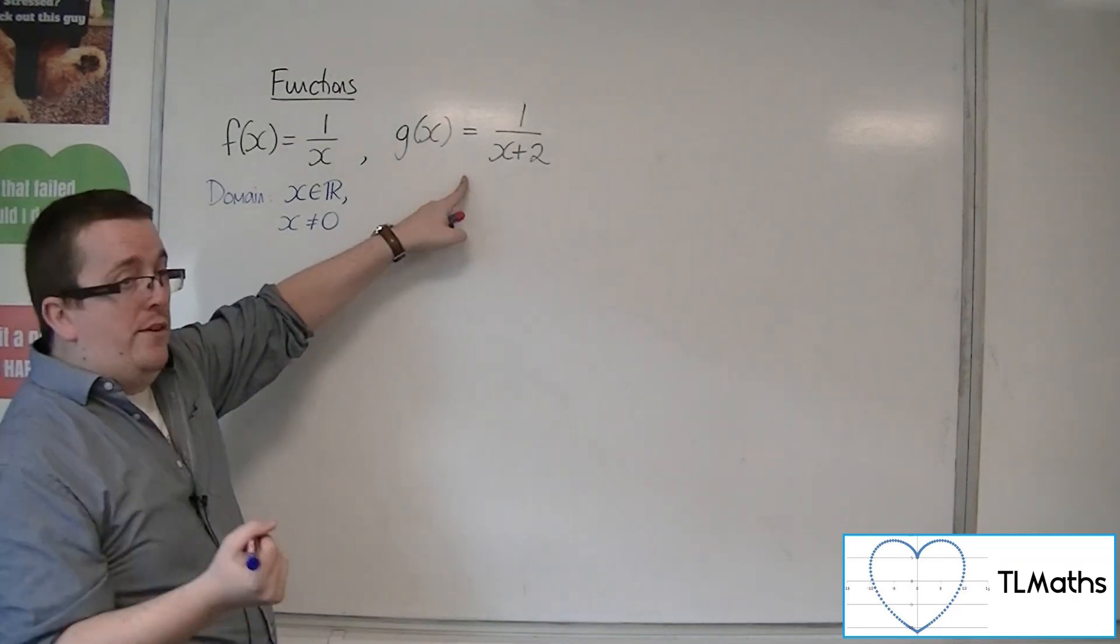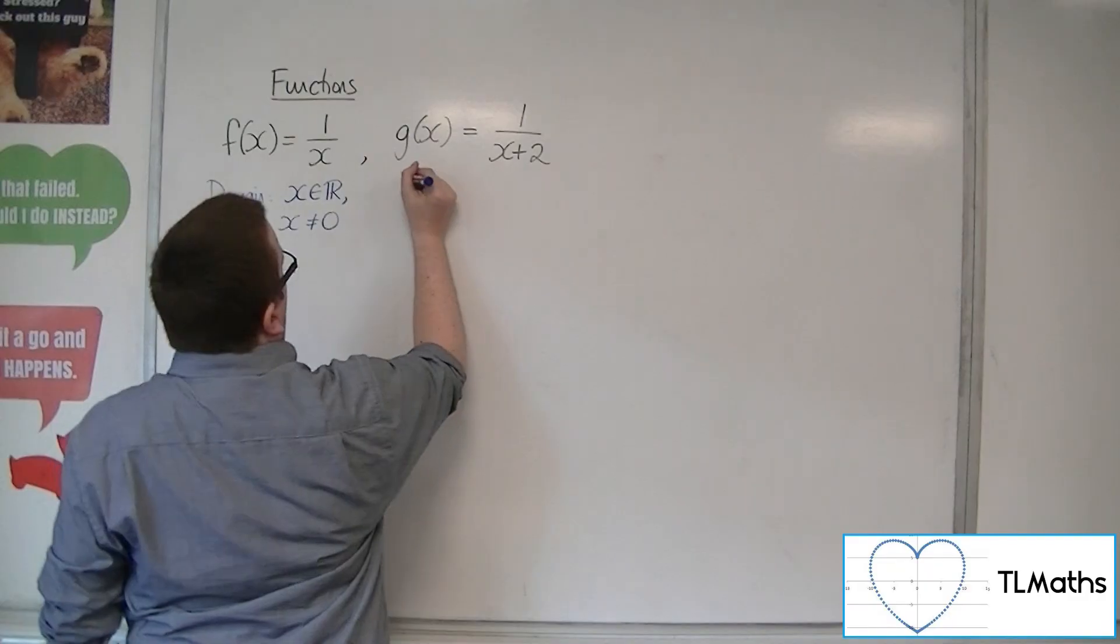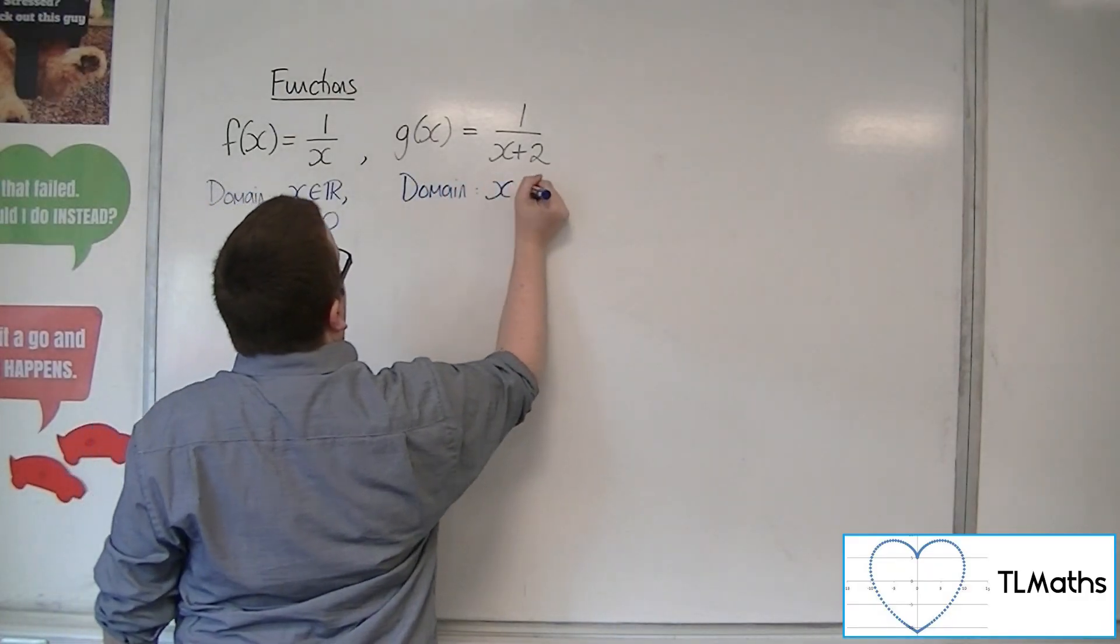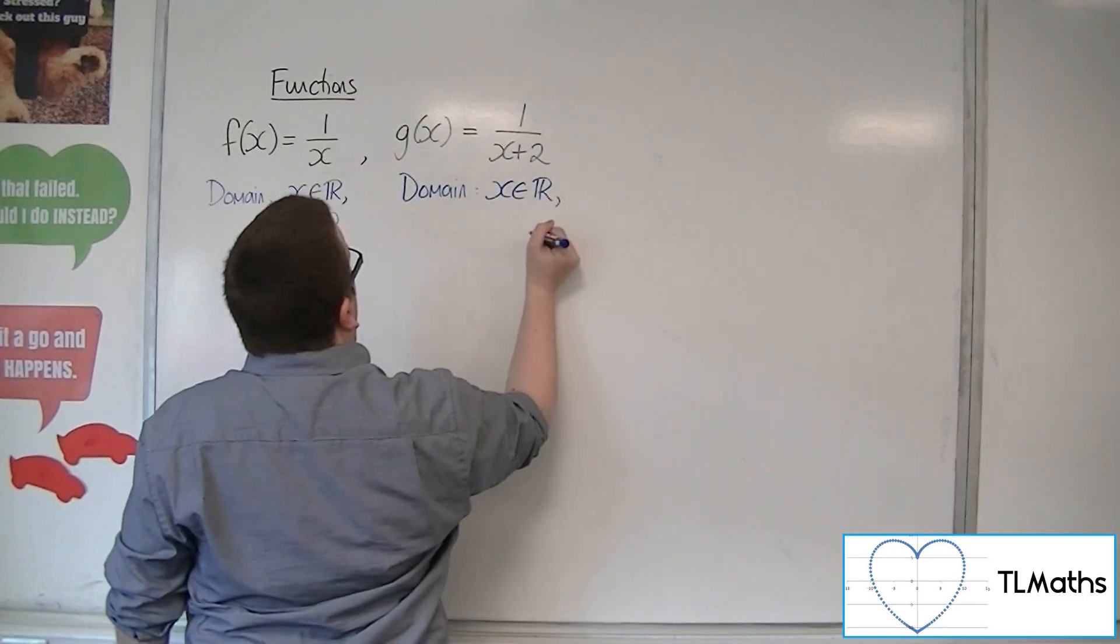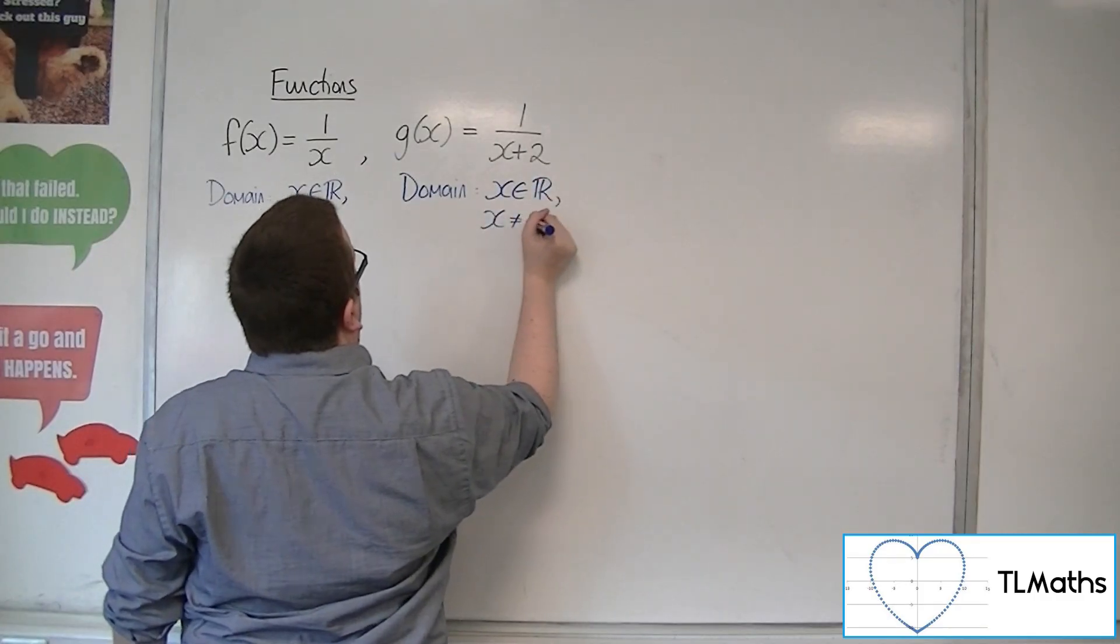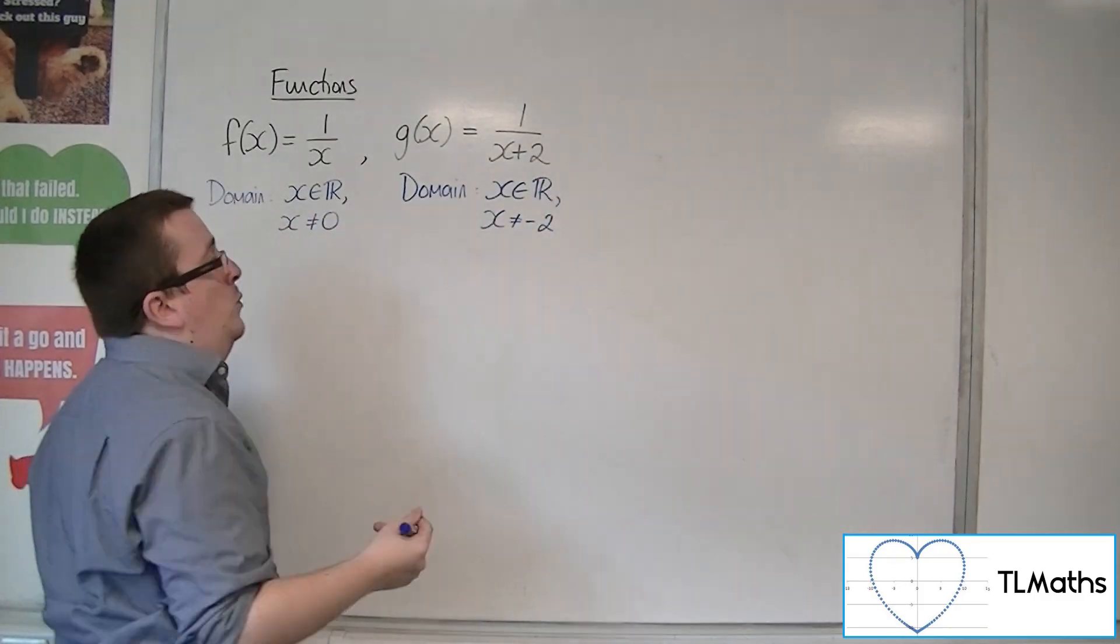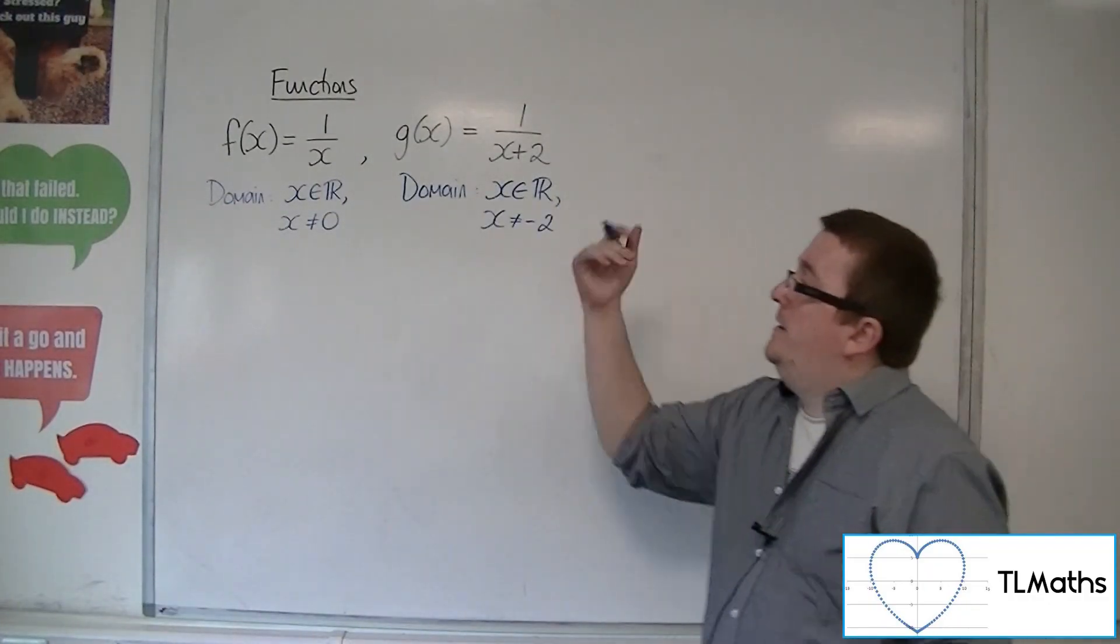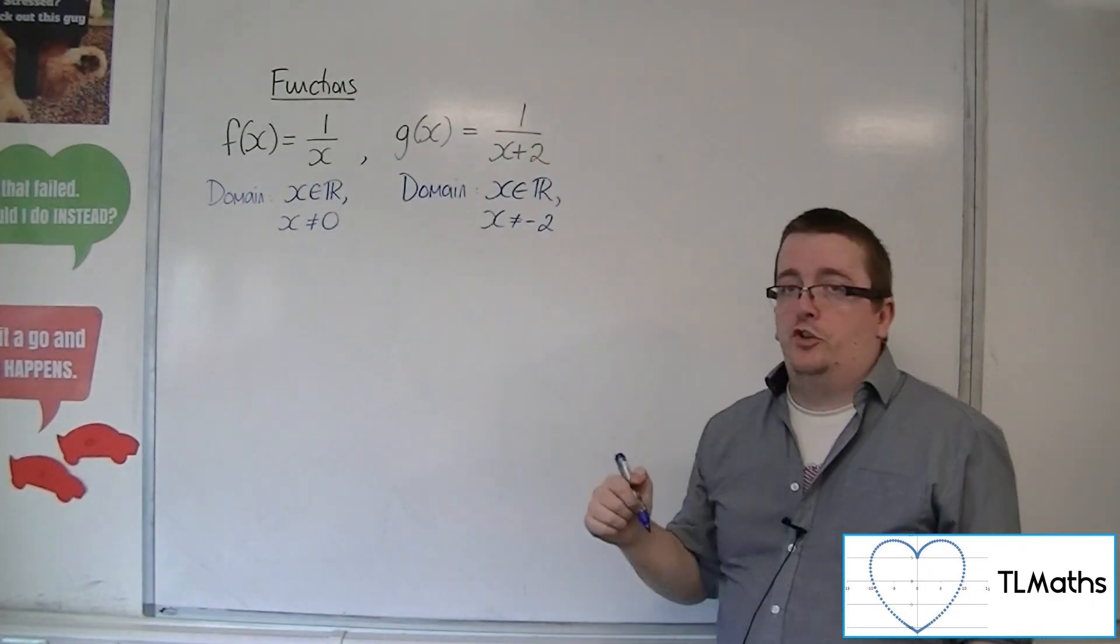Now, for g of x, its domain can be any real value of x apart from minus 2, because minus 2 would make the denominator 0. So we have the domain now for both of these functions.